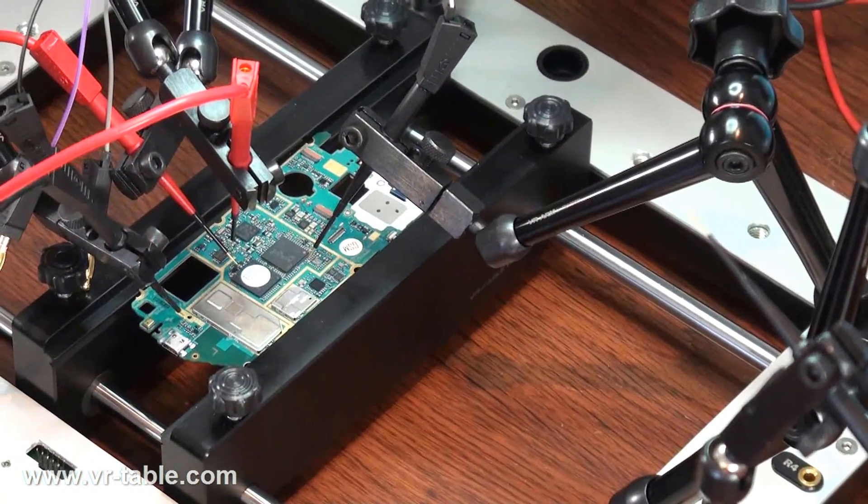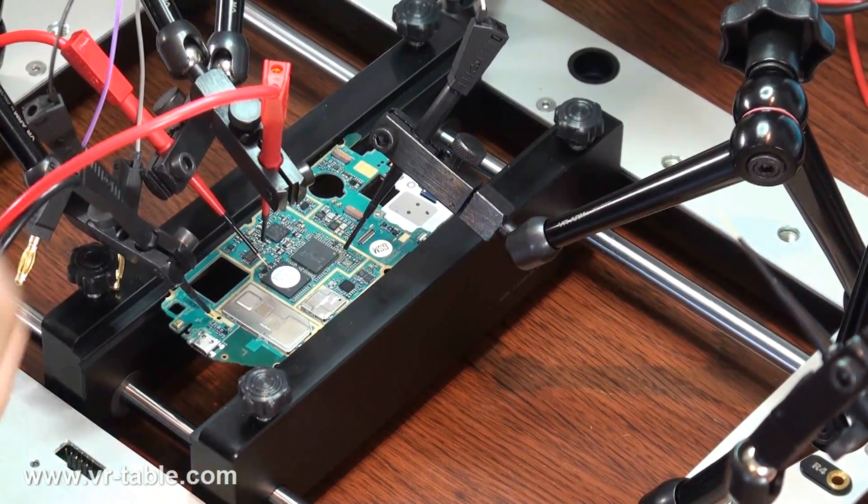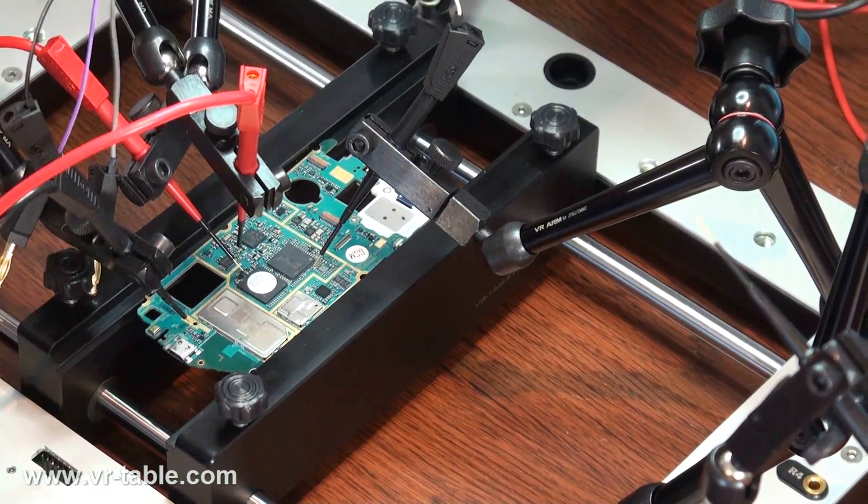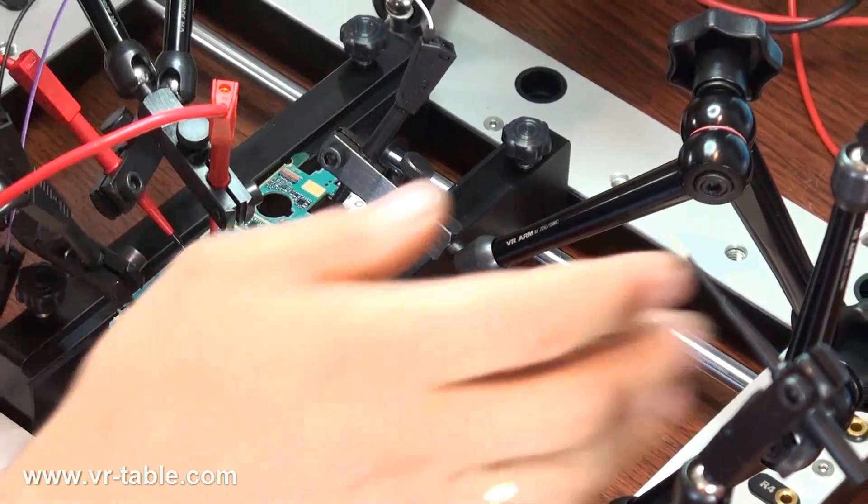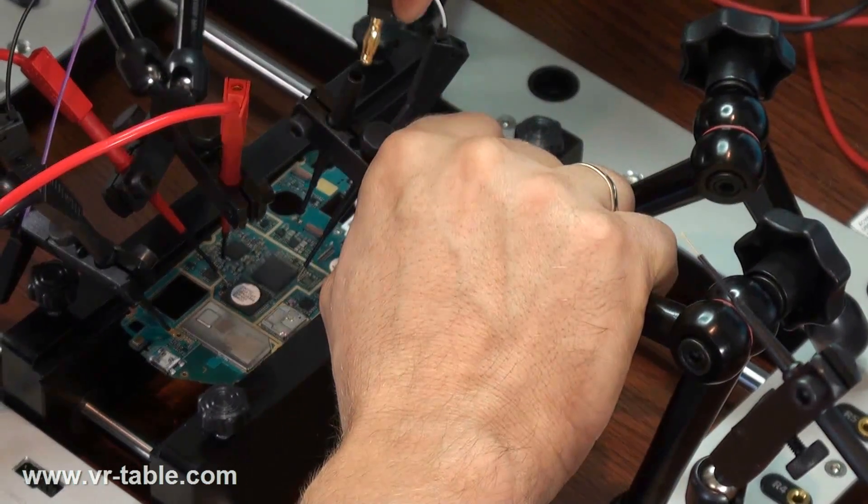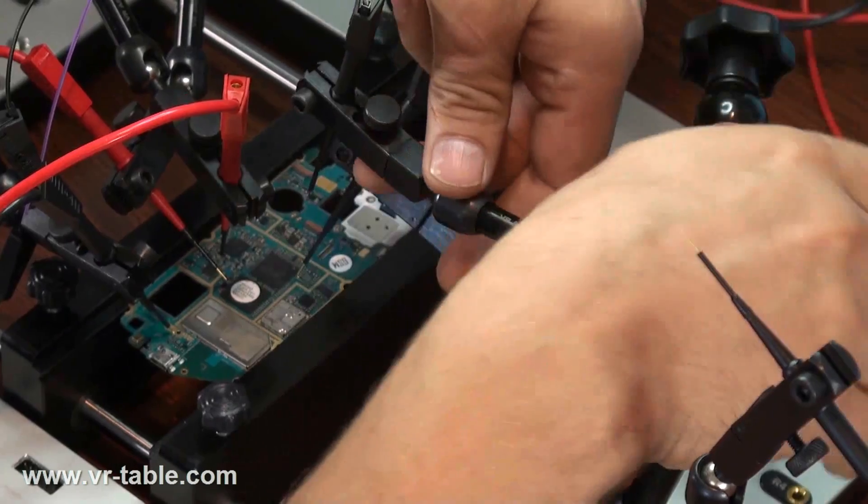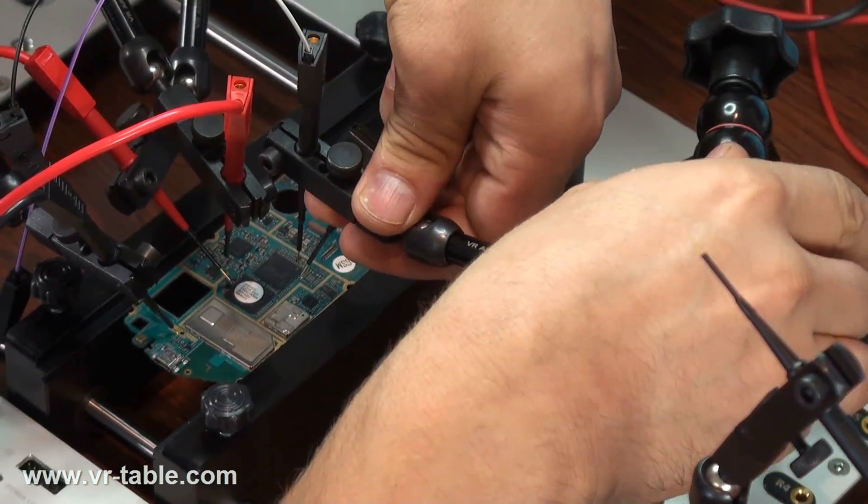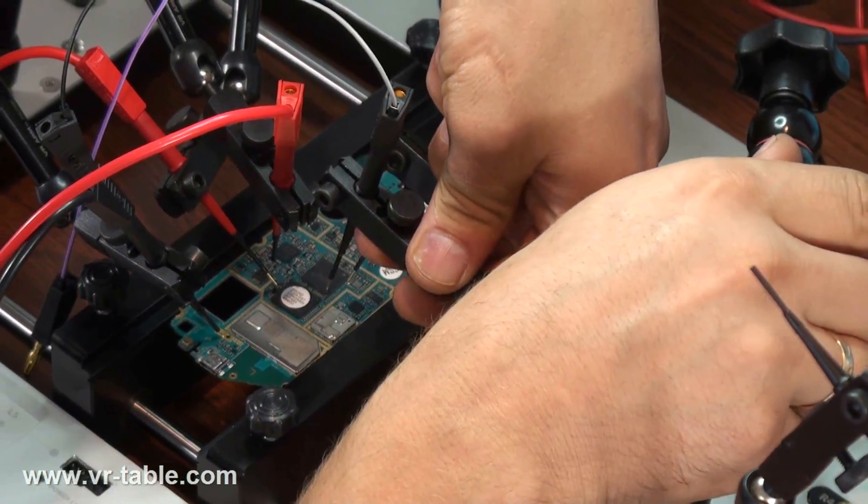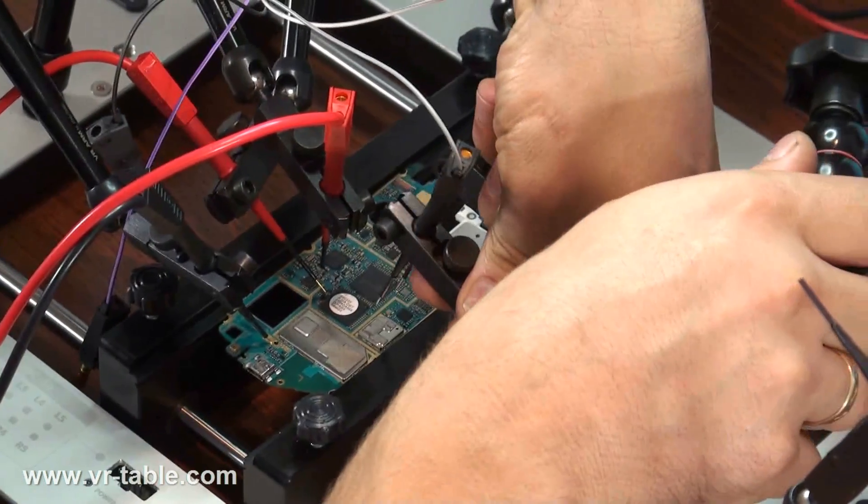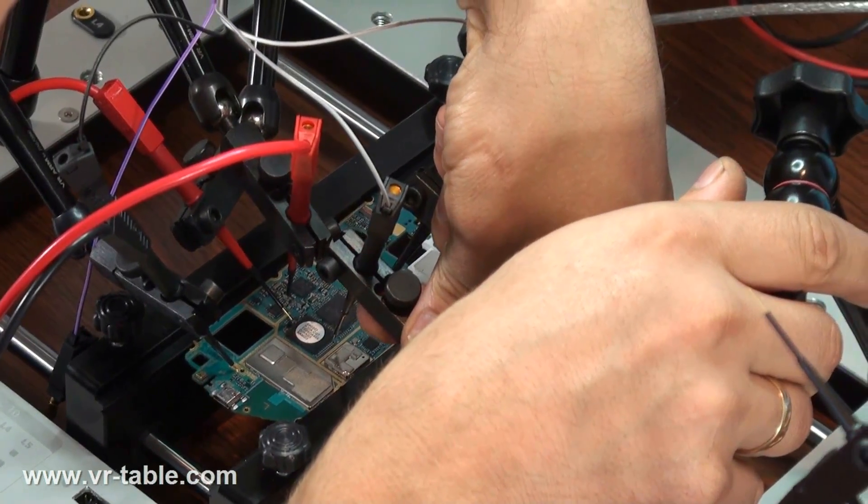After connecting all the probes to the desired points on PCB, so CLK, CMD, data and also VCC and VCCQ, we can connect the other end of the banana connector into the VR table adapter and configure it. As you can see, we have already put banana connectors into the probes to avoid movement of tips during connection, which is the procedure we suggest for all connections using VR table.